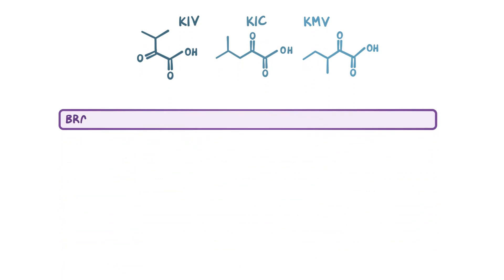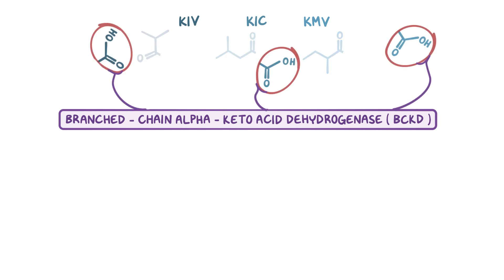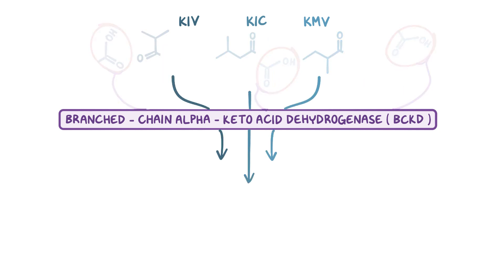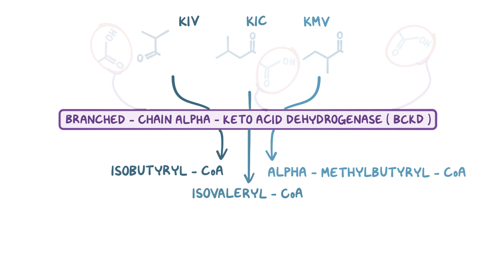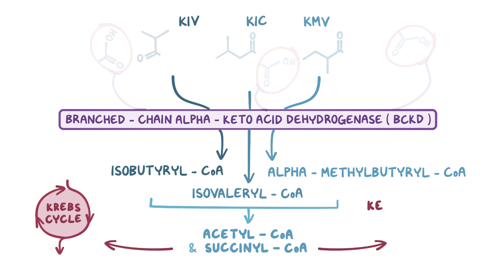In the second step, branched-chain alpha-ketoacid dehydrogenase complex, or BCKD, removes the carboxyl group from these ketoacids and turns them into the intermediates isobutyryl-CoA, isovaleryl-CoA, and alpha-methylbutyryl-CoA. These intermediates will eventually be converted into acetyl-CoA and succinyl-CoA, which are then used by other metabolic processes like the Krebs cycle, ketogenesis, and gluconeogenesis.